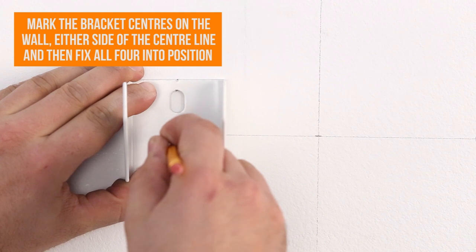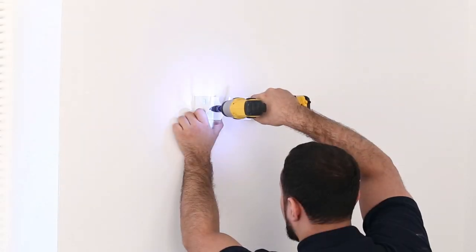Mark the bracket centres on the wall, either side of the centre line and then fix them into position using an impact driver.